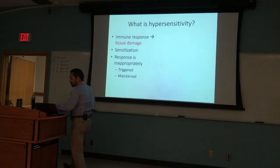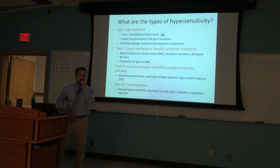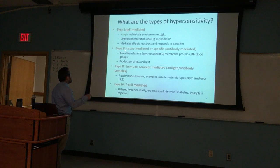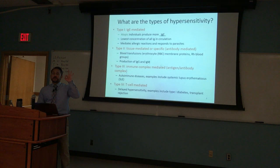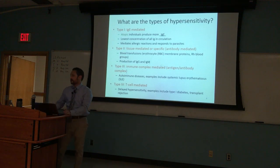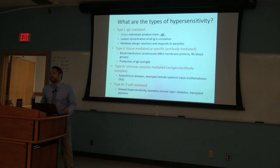We're going to walk through these categories — this is a roadmap for today. We've got type 1, type 2, type 3, and type 4. The first three categories are B-cell mediated. You could put a big bracket and label it B-cell mediated or B-cell involvement.